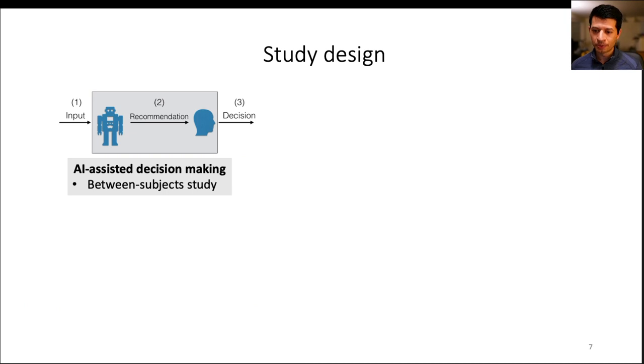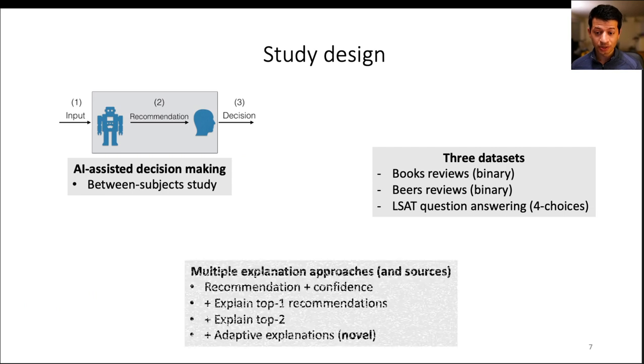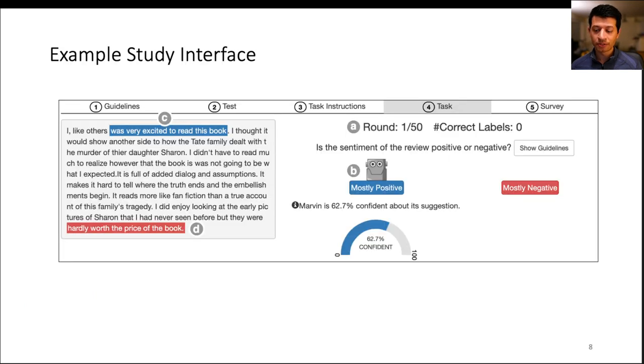Our study used a between-subject design using three datasets, which included two binary classification datasets and another much harder LSAT question answering dataset. We investigated multiple explanation strategies and sources. The complete details of our experiment can be found in our paper, but here's a screenshot of our study interface for one of the classification tasks.